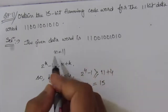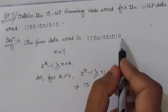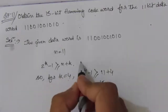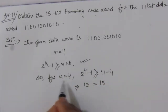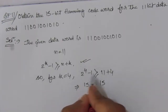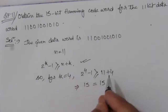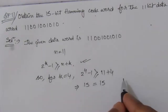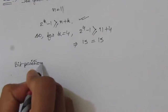Here we have n equal to 11, meaning we have 11 bits in the given word. We need to find the value of k. For k equal to 4, we get 2 to the power 4 minus 1 equals 15, and n plus k equals 11 plus 4 equals 15. So left-hand side equals right-hand side, and this condition is fulfilled. Therefore we can use four parity bits.